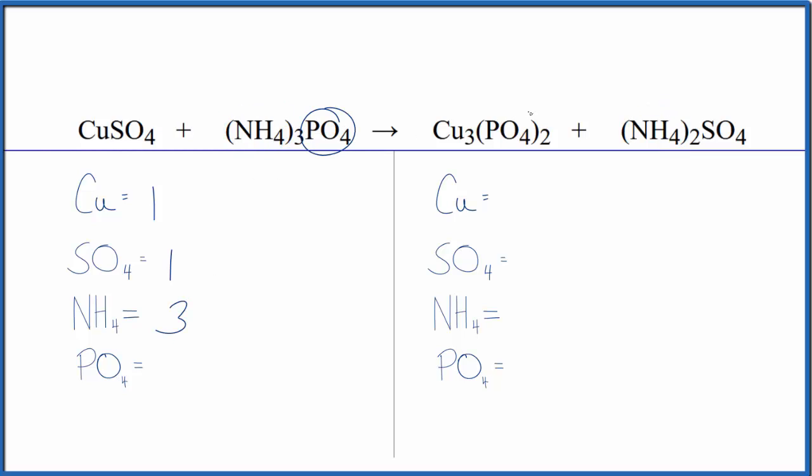And then for the phosphate, here it is once again, so we have one phosphate. On the product side we have three copper, one sulfate, two ammonium ions, and then two of these phosphate ions. So you can see this is a lot neater, makes it go really fast.